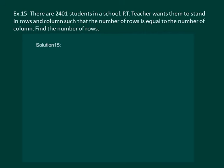Let us read the question. There are 2401 students in a school. PT teacher wants them to stand in rows and columns such that the number of rows is equal to the number of columns. Find the number of rows.